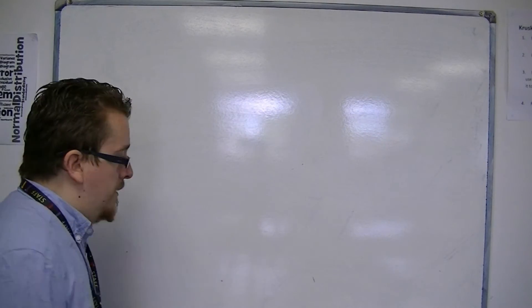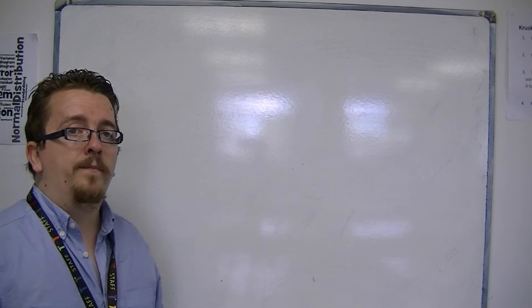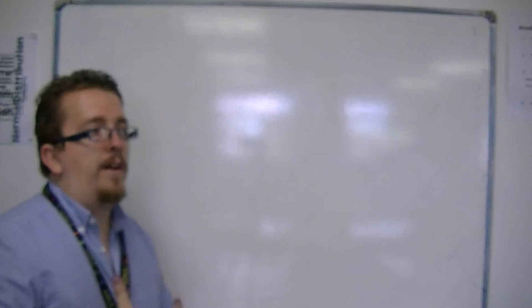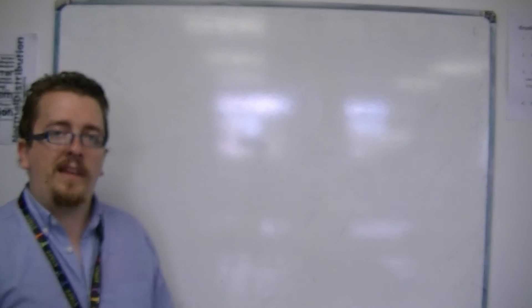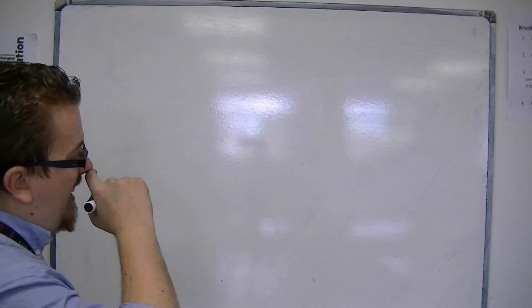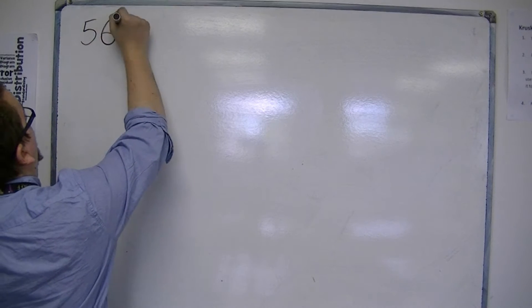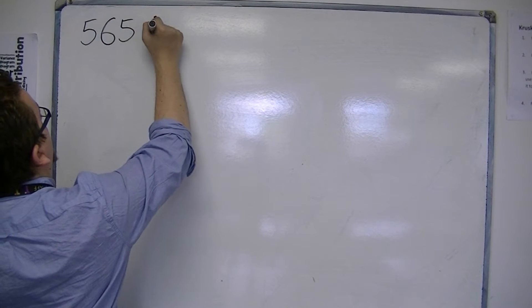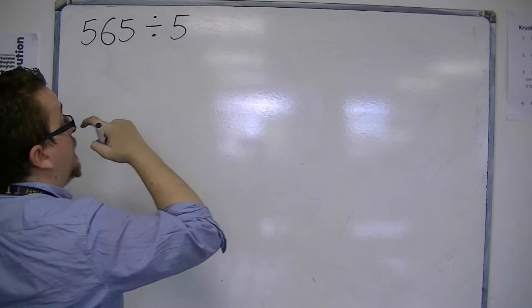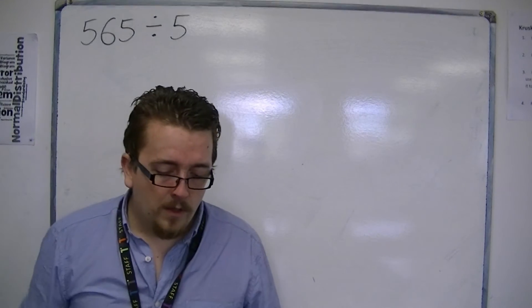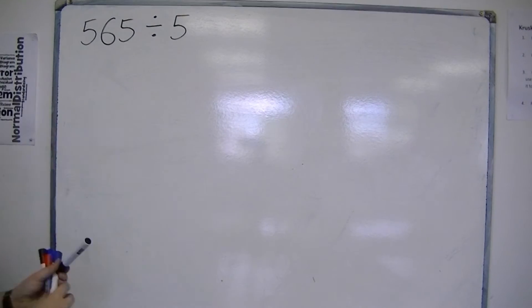The first one is known as chunking, and it isn't one that I would really suggest you use at GCSE level. So, let's say we want to do 565 divided by 5. So, 565 divided by 5, and here's the chunking method. It's usually set out in a similar way to this.